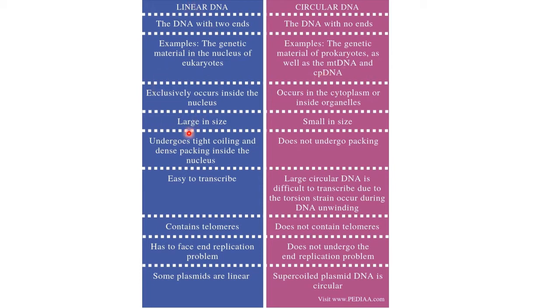Linear DNA occurs exclusively inside the nucleus. Circular DNA occurs in the cytoplasm or inside organelles like mitochondria and chloroplasts.